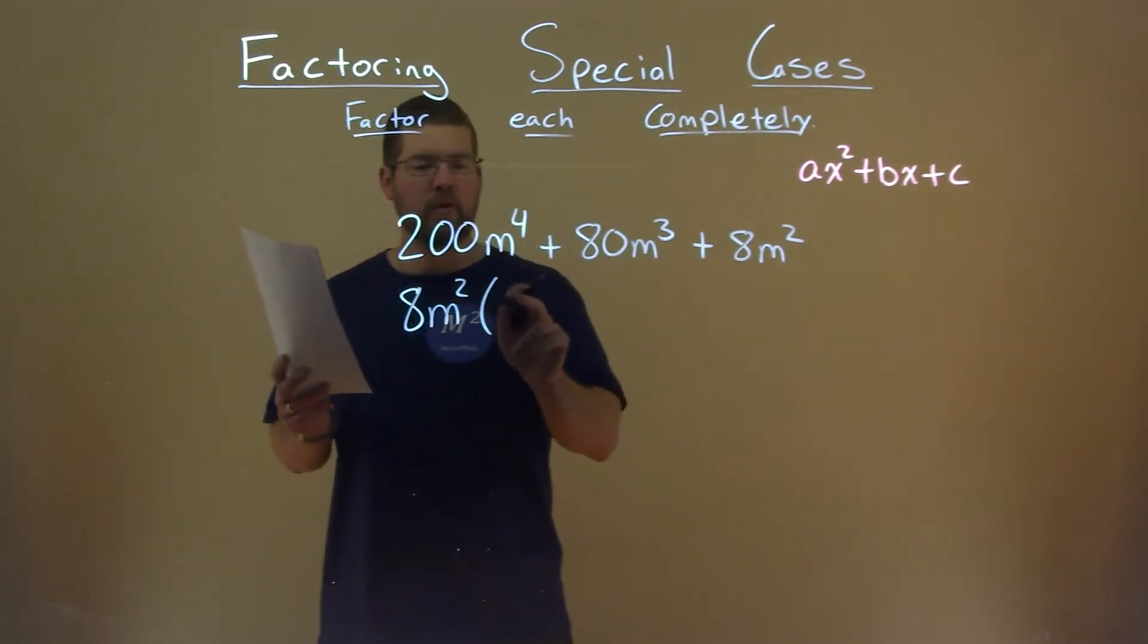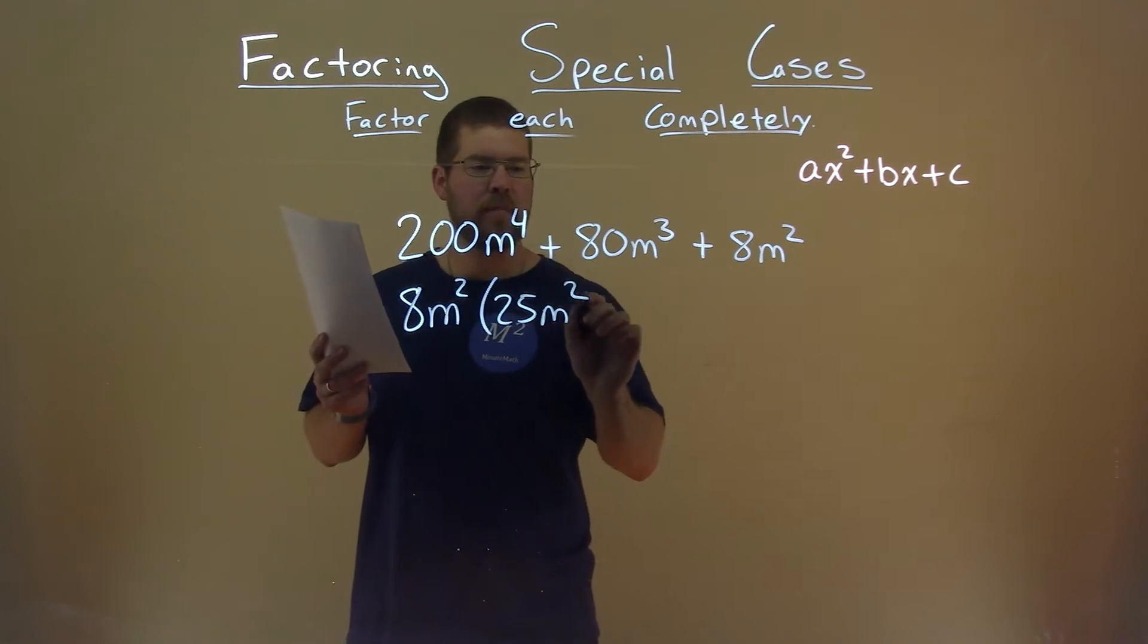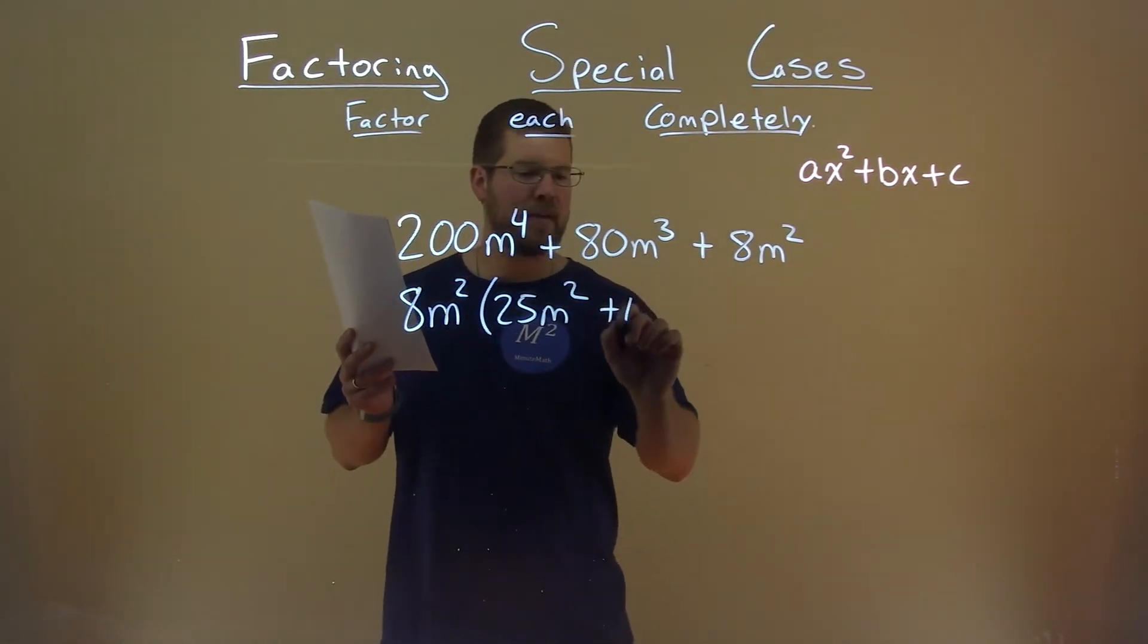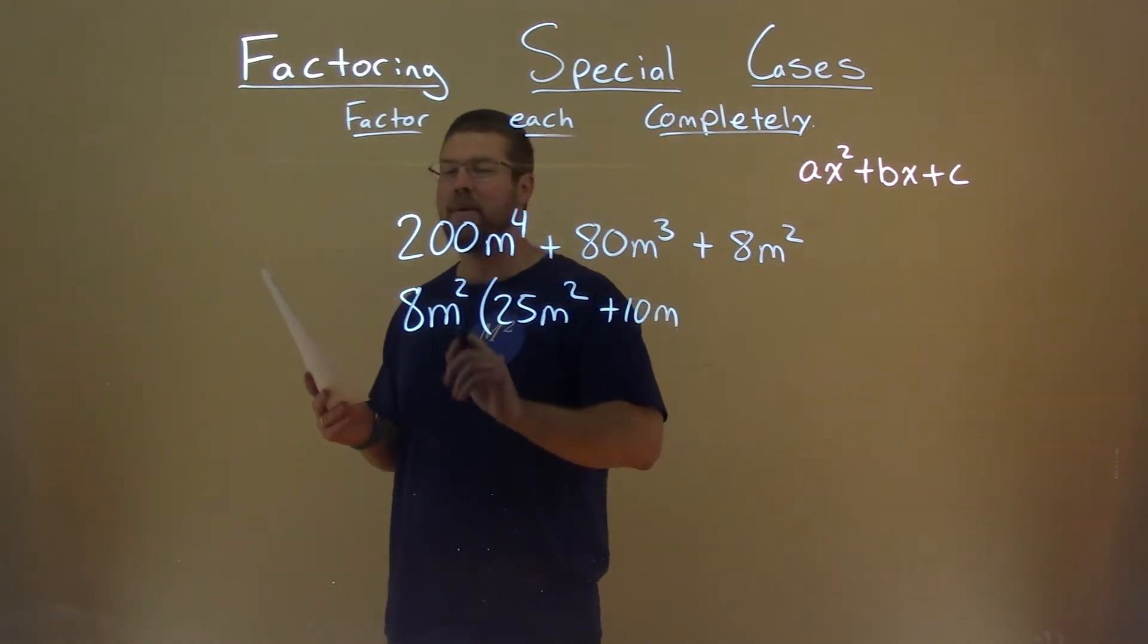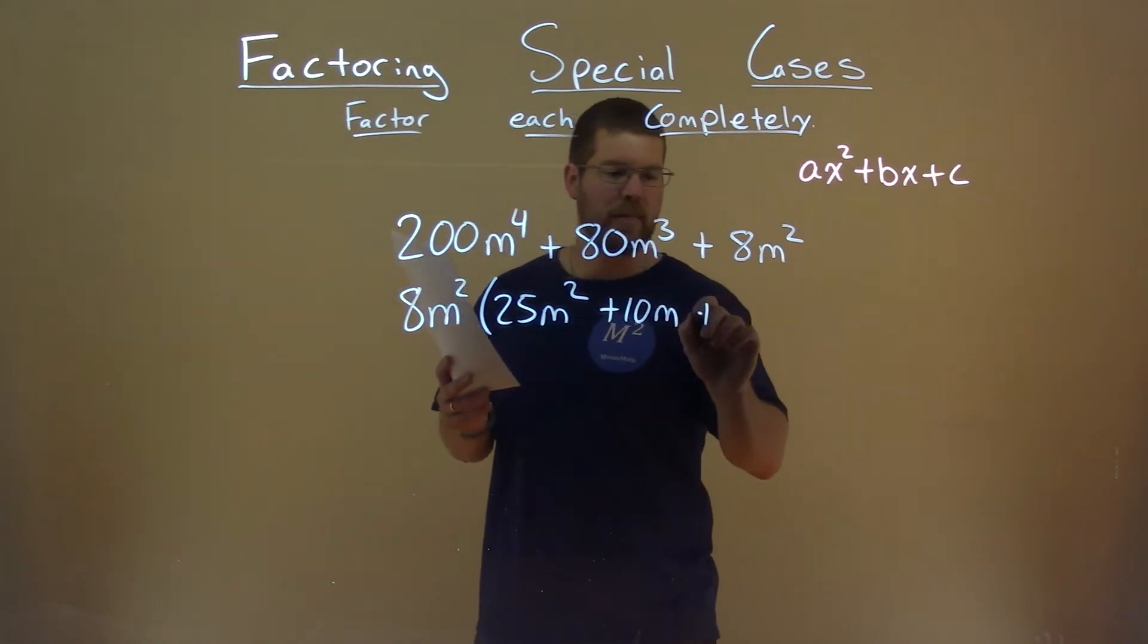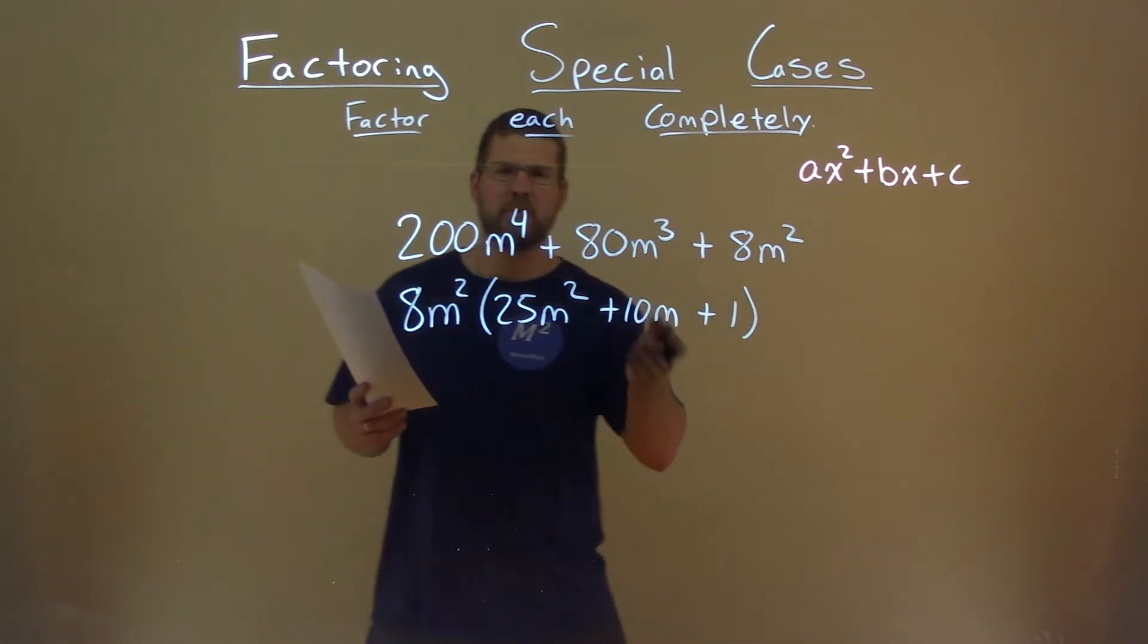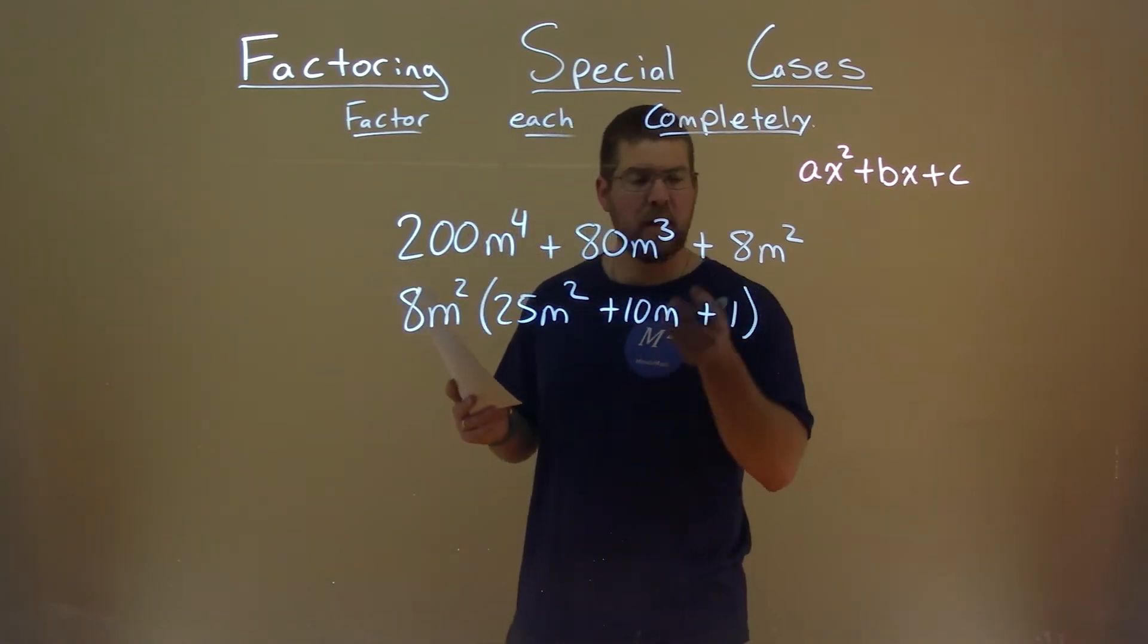Well, 200m to the fourth power divided by 8m squared is 25m squared. 80m to the third power divided by 8m squared is 10m. And lastly, 8m squared divided by 8m squared is just 1. So now we have a much simpler problem: 8m squared times 25m squared plus 10m plus 1.